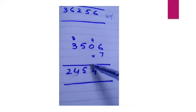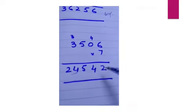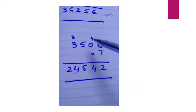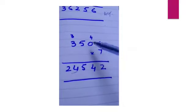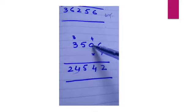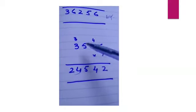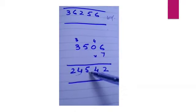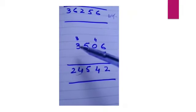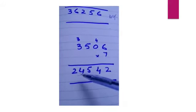Next question is 3506 multiply by 7. Here our multiplier is 7. 7 times 6 is 42. Unit place is written down, 4 is carried. 7 times 0 is 0, plus 4 equals 4. We write 4 there. 7 times 5 is 35. 5 in unit place, 3 is carried. 7 times 3 is 21, plus 3 is 24. We don't have any other number, so we write 24 here.